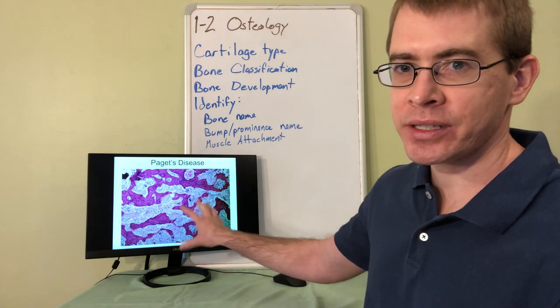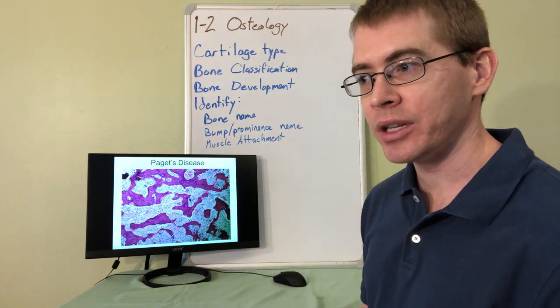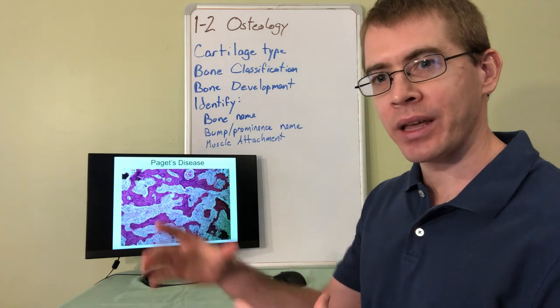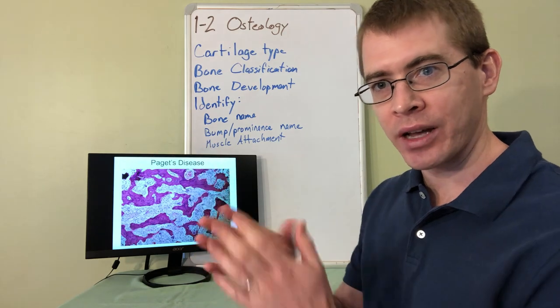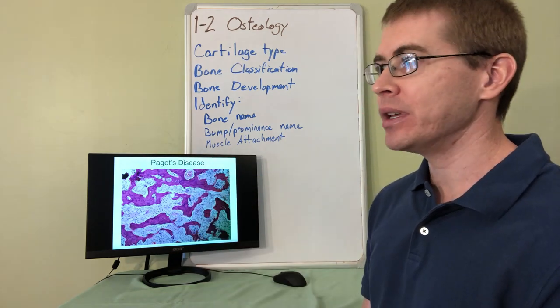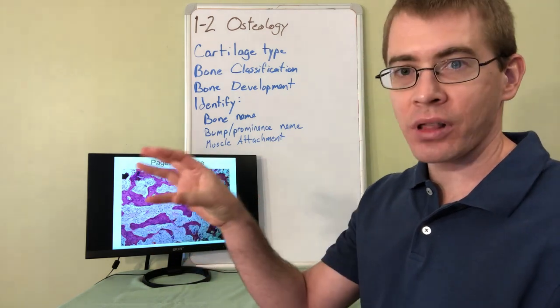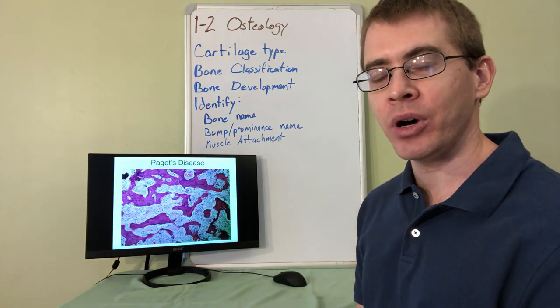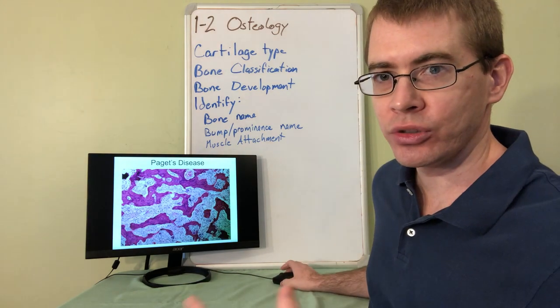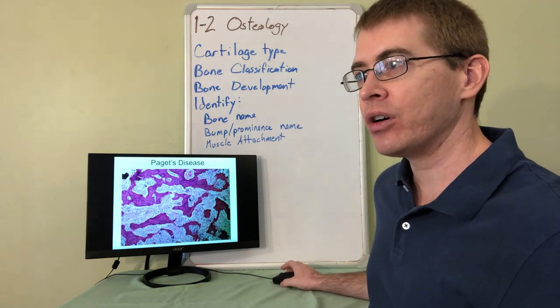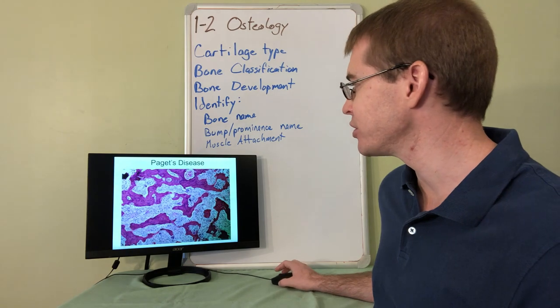What happens in Paget's disease is that the bones form, the developmental processes are complete, and the bone forms a complete normal bone. But throughout the lifespan of the individual, there's an imbalance between the osteoclasts that break down the bone and the osteoblasts that form the bone. Because of this imbalance, the osteoclasts win out and they gradually break down the bone faster than it can be restored. That's generally due to genetic conditions, but it can also be stimulated by viruses and infections such as viral infection.